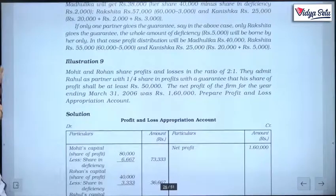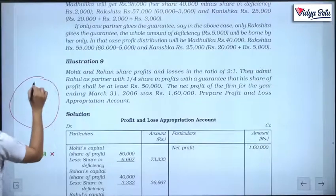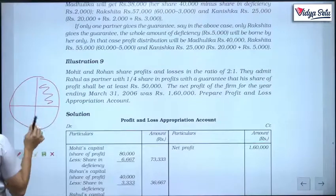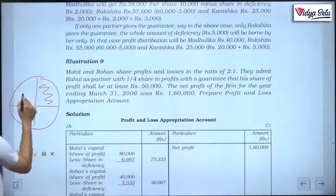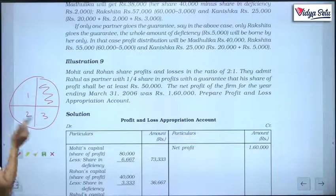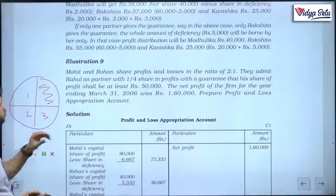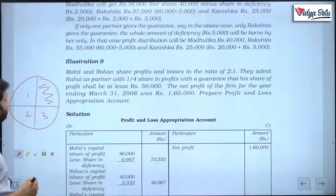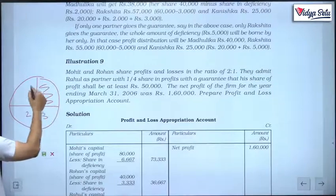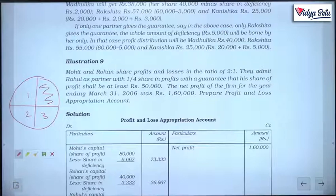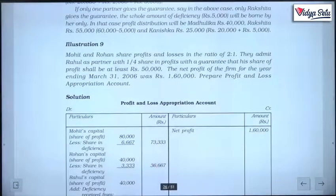Let us see the next illustration. Mohit and Rohan share profits and losses in the ratio 2:1. They admit Rahul as a partner for one-fourth share in the profit. So 1/4 is given to the new partner, and 3/4 is remaining for the old partners. The net profit of the firm was 1,60,000. We need to find the new profit sharing ratio and prepare the P&L appropriation account.